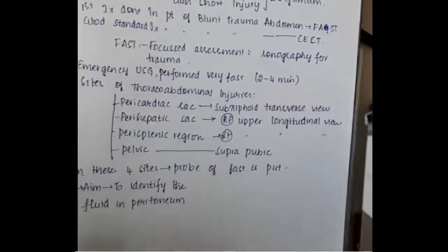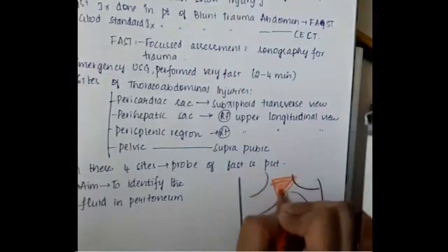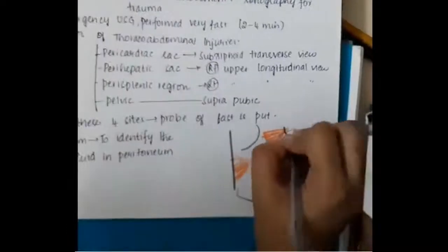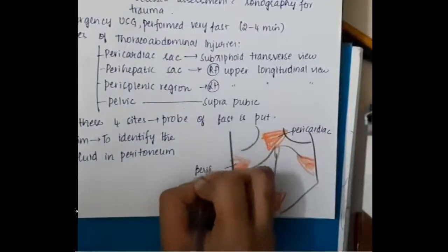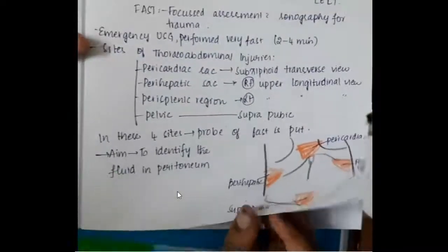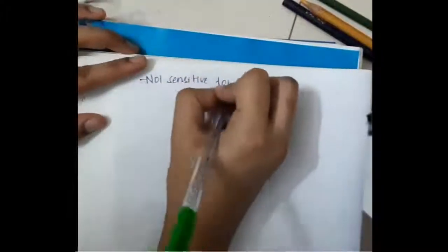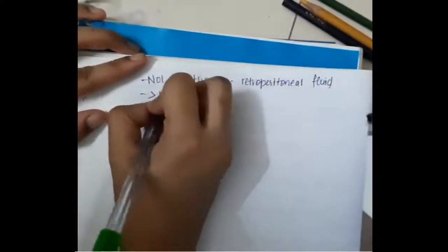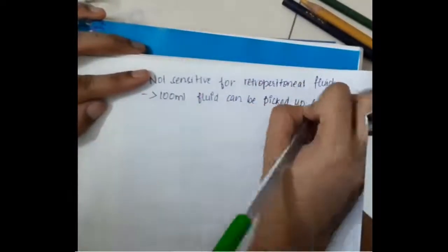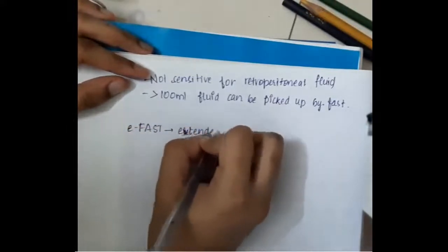In all these 4 sites we place the FAST probe to identify fluid in the peritoneum — pericardiac, perihepatic, perisplenic, and suprapubic sites. FAST is not sensitive for retroperitoneal fluid; more than 100 ml of fluid can be picked up by FAST. The probe angle used is 45 degrees.